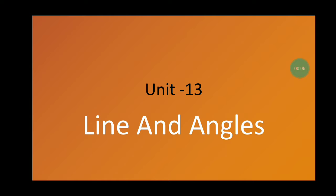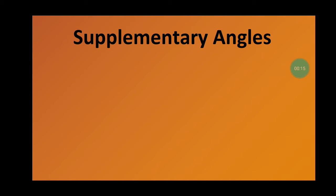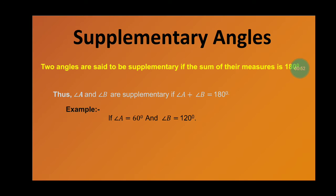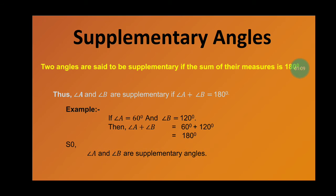Hello students, today's unit is Unit 13: Lines and Angles — Supplementary Angles. Supplementary angles: if two angles' sum is 180 degrees, they are supplementary angles. That is, angle A and angle B are supplementary if angle A plus angle B equals 180 degrees. For example, if angle A is 60 degrees and angle B is 120 degrees, then 60 plus 120 equals 180 degrees, so angle A and angle B are supplementary angles.